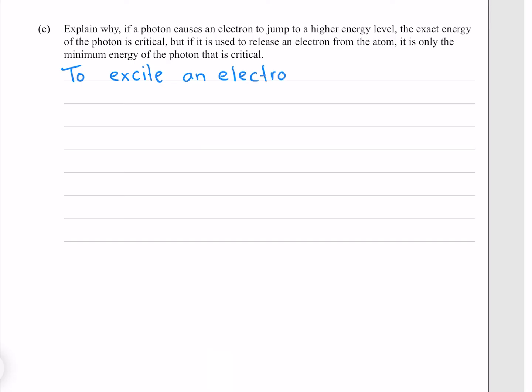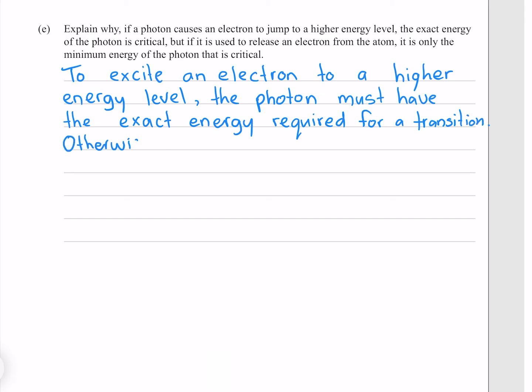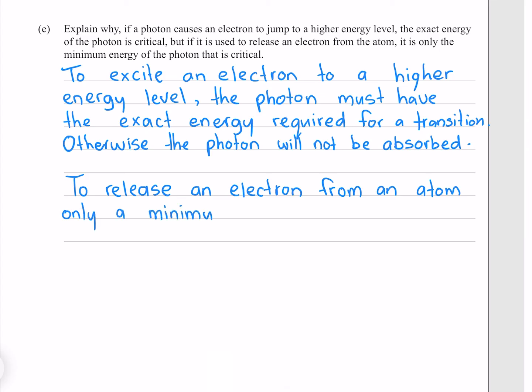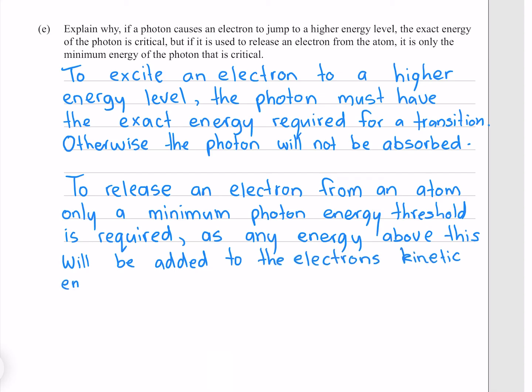To excite an electron to a higher energy level, the photon must have the exact energy required for a transition, otherwise the photon will not be absorbed. To release an electron from an atom, only a minimum photon energy threshold is required, as any energy above this will be added to the electron's kinetic energy.